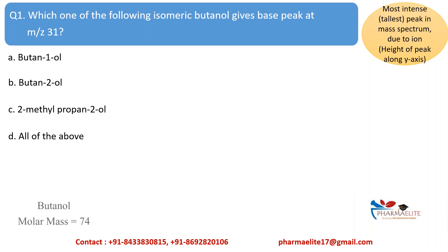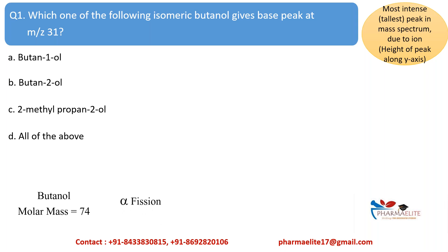We all know that the molecular mass of butanol is 74. The fragmentation or ionization is based on alpha fission, meaning fragmentation of the molecule will take place on the bond linked to the alpha carbon. The alpha carbon is the carbon that attaches to the functional group — here, it is a hydroxyl group. Let us start with the structures of each compound.